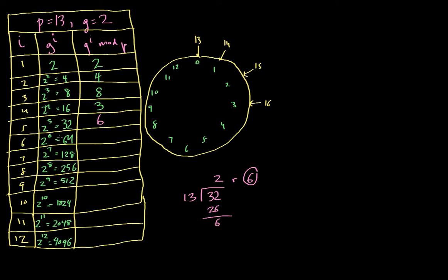Similarly, 2 to the 6th is 64, and I can figure that out by multiplying the previous result by 2. So 6 times 2 is 12. Let's verify: 13 divided into 64 gives 4 times 13 equals 52, with 12 left over. So the remainder is 12, and that's consistent. I just doubled the previous result.